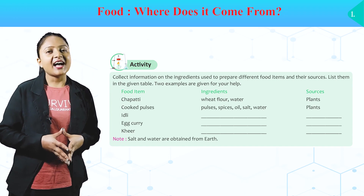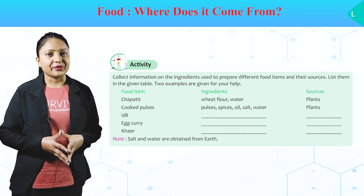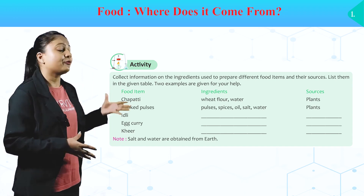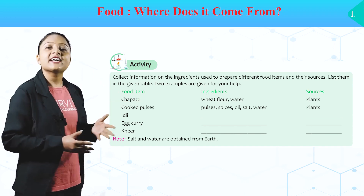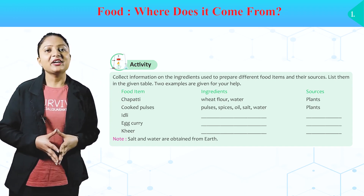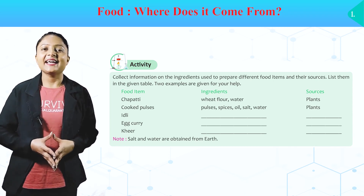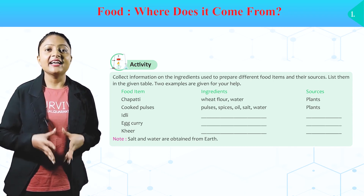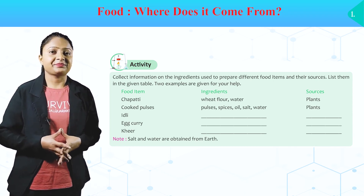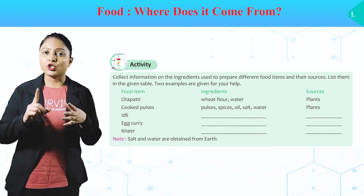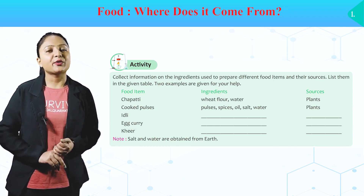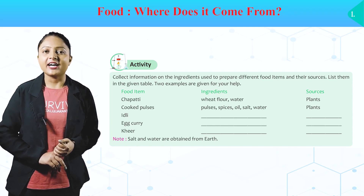List them in the given table. Two examples are given for your help. Food items: chapati, cooked pulses, idli, egg curry, kheer. Note: salt and water are obtained from earth.